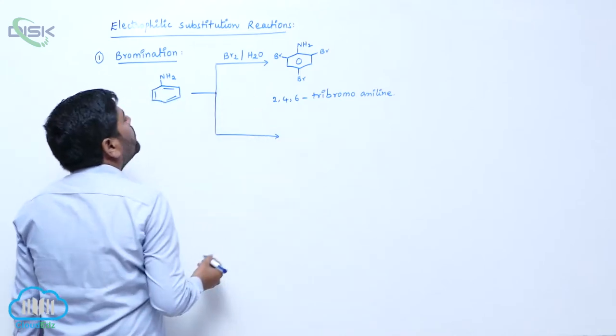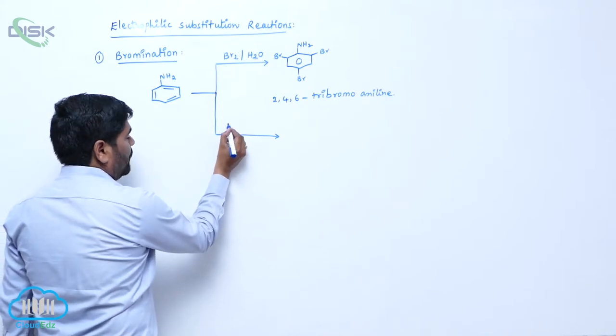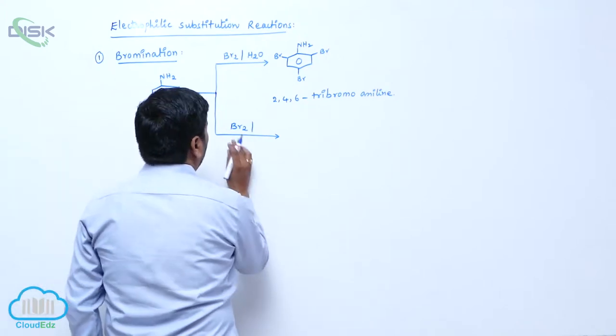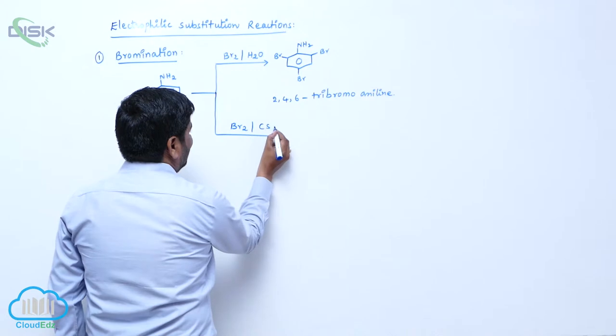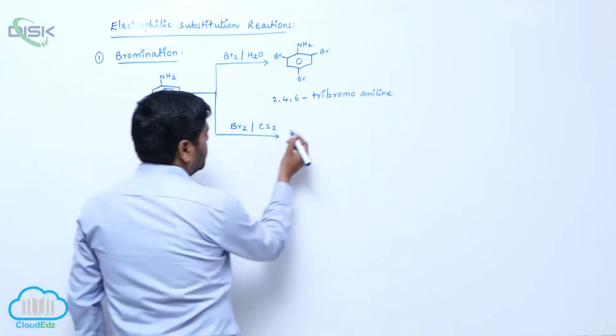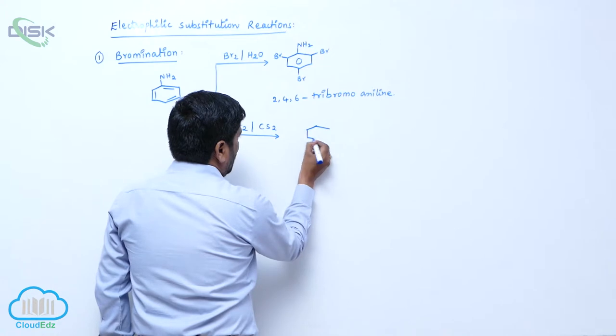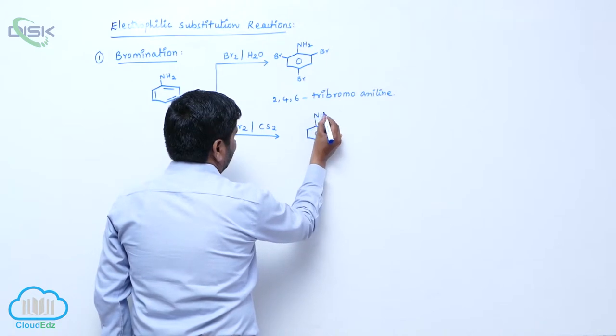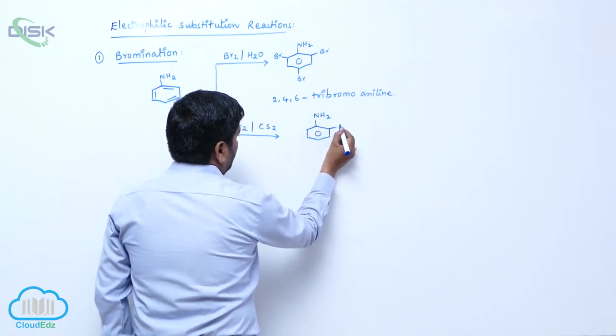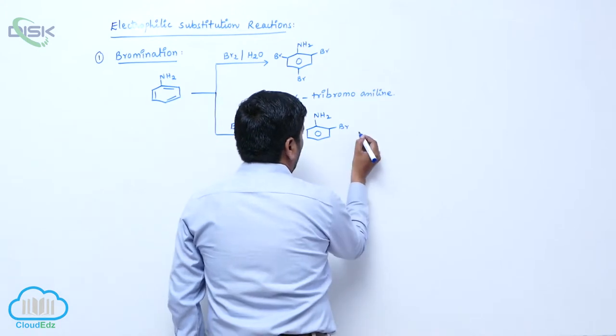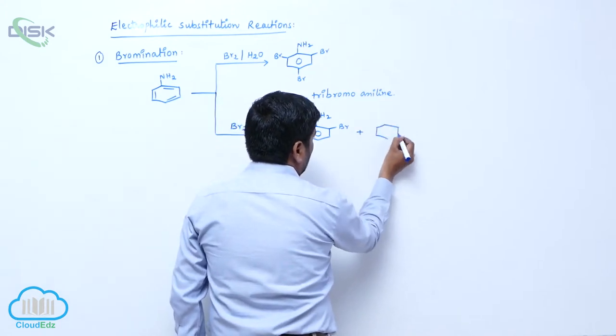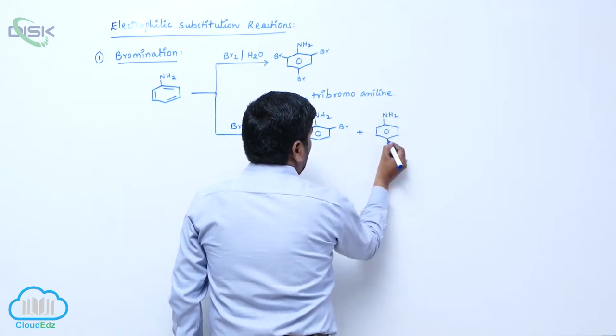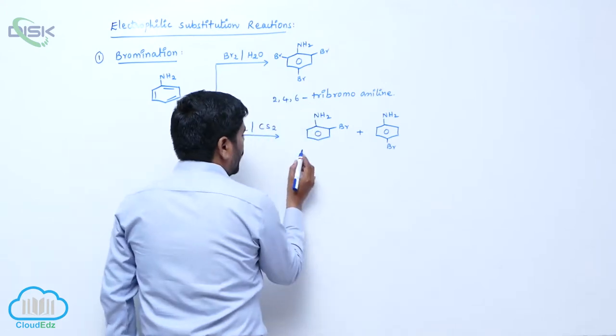Instead of a non-polar solvent medium, if you are maintaining this particular reaction in carbon disulfide or acetic acid, ortho and para products are formed but yield is very less. Here is NH2 then we get orthobromoaniline plus parabromoaniline.